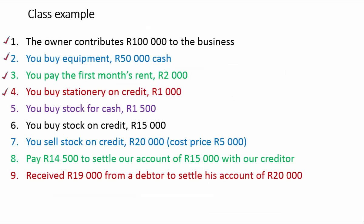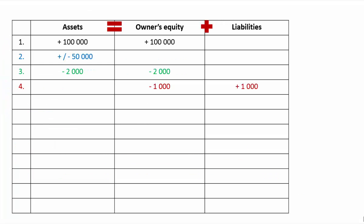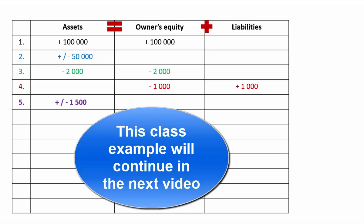Transaction 5: you buy stock for cash, R1,500. The account name for stock is trading inventory, which falls under assets — that is what the money was used for. You bought it for cash, so bank is the source of the money. Both accounts are assets: bank decreases and trading inventory increases, so you are exchanging one asset for another, just like transaction 2. The net effect on assets is zero — assets increased by R1,500 and decreased by R1,500 — with no effect on equity or liabilities. The accounting equation balances.